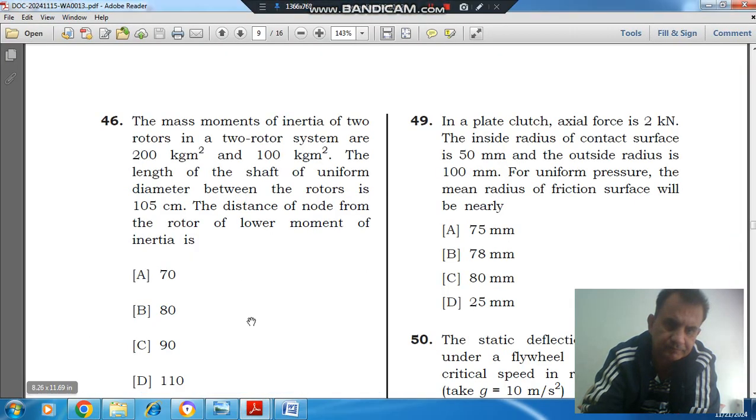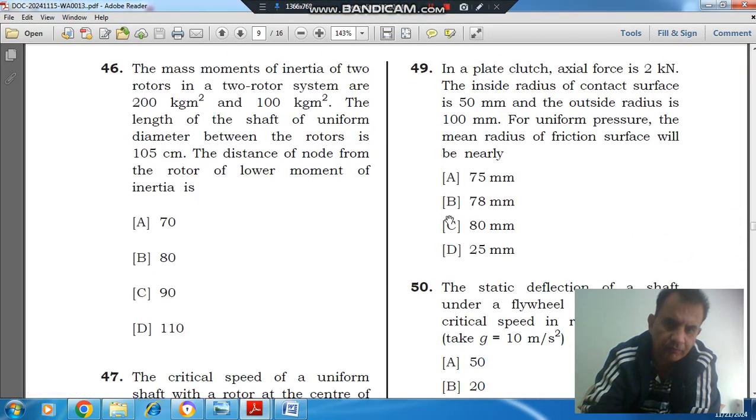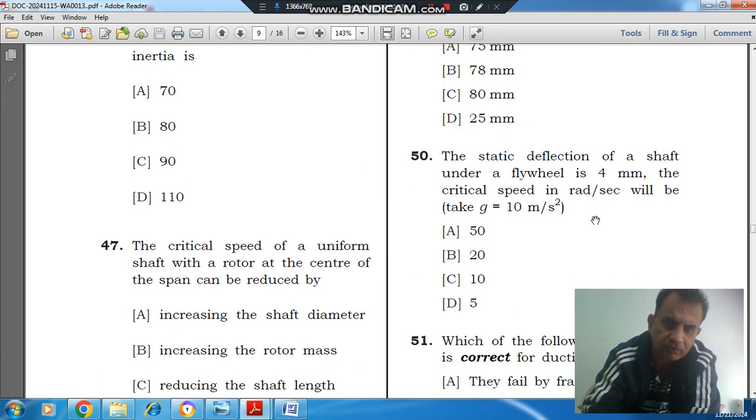Question number 50. The static deflection of a shaft under a flywheel is 4 mm. The critical speed in radian per second will be, take g equal to 10 meter per second squared. Option A: 50, option B: 20, option C: 10, and option D: 5.